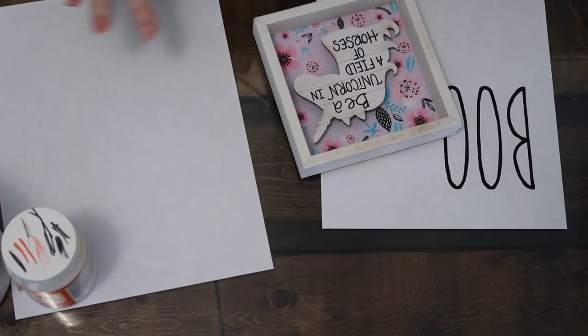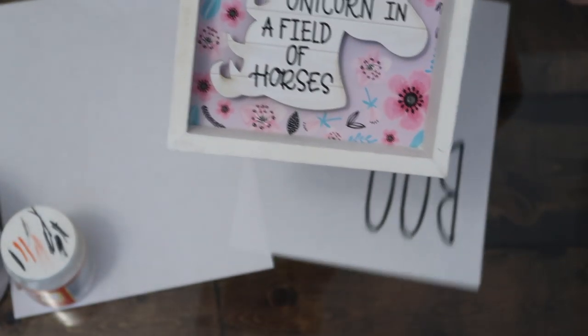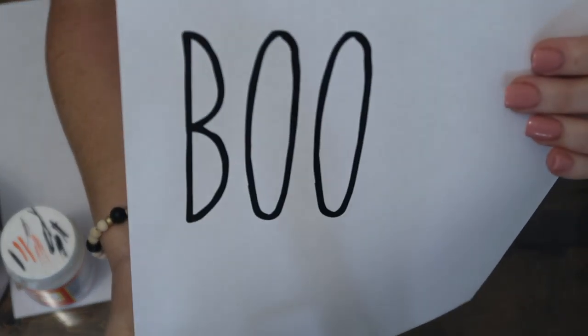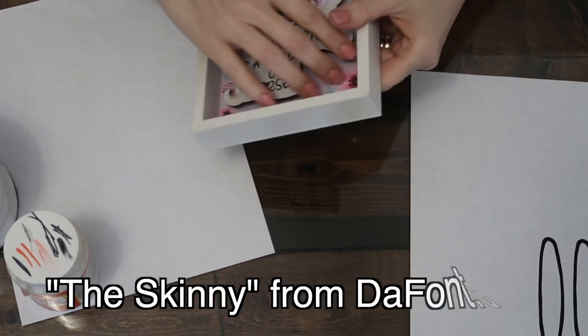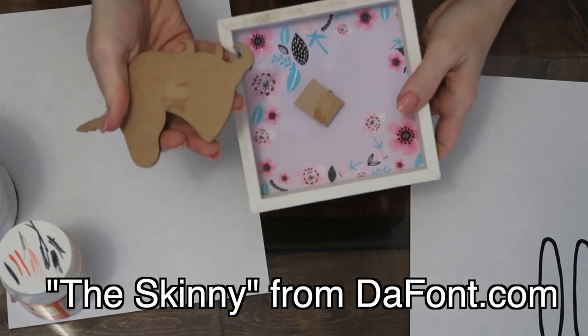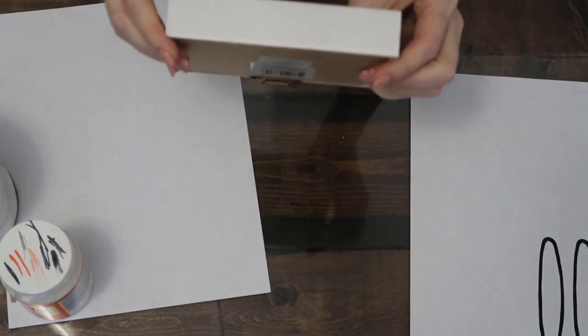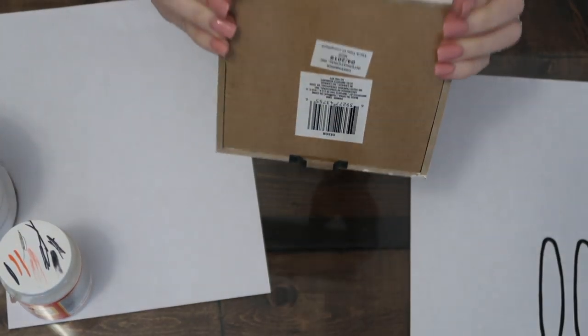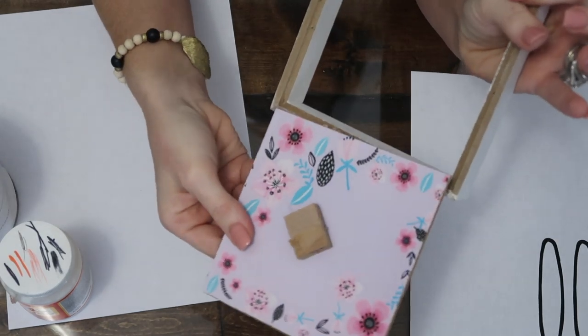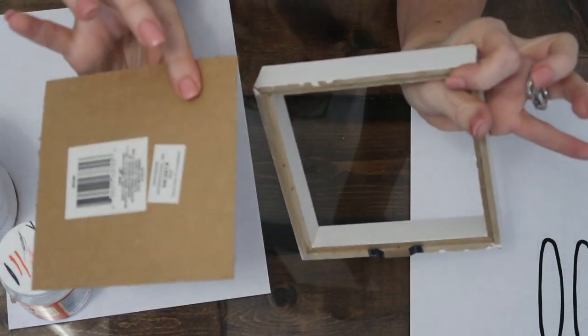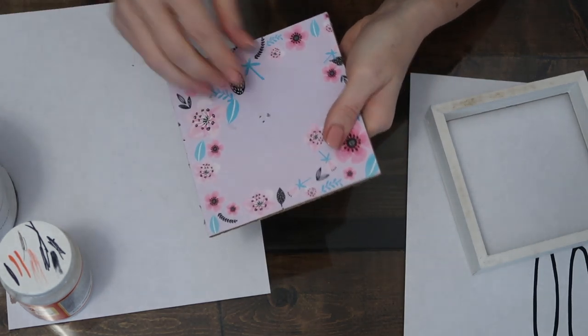The next project is a Rae Dunn inspired boo. I'm starting off with this little piece from Dollar Tree, not sure what it's called, and a boo printout that I just got from my computer. I used the skinny font from dafont.com and you can get it for free and download it and use it for anything you need. I'm going to start taking apart this little item here. Make sure you're careful, there are little staples in there, so I learned the hard way. It is fairly easy to take apart. I'm just pulling everything off so I have a nice surface to paint.